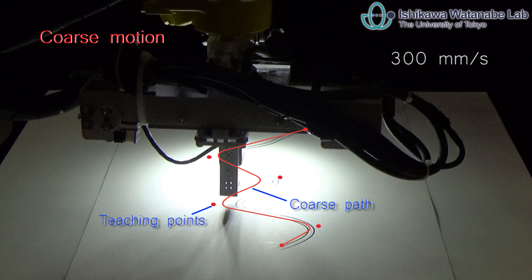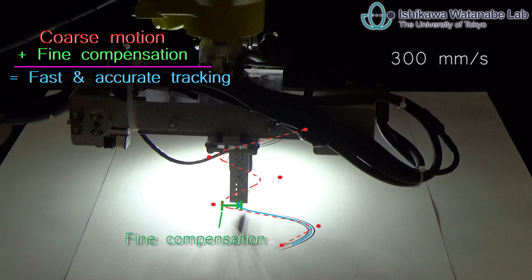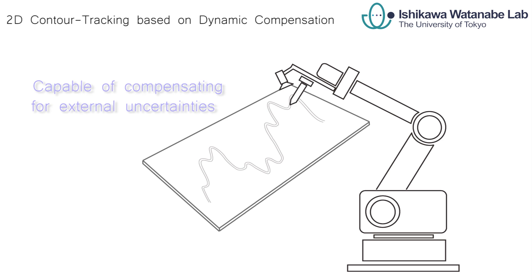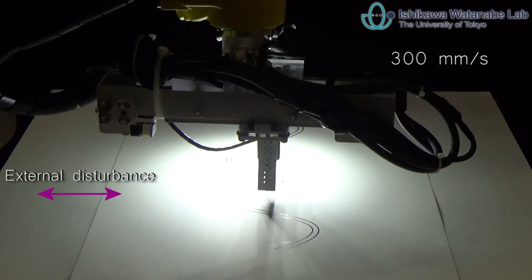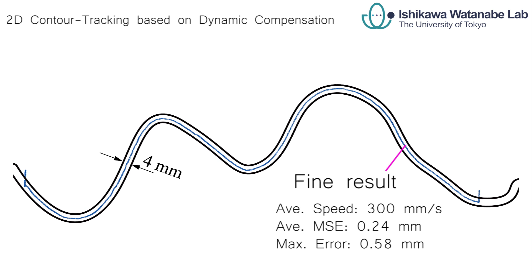This shows the coarse path through easy and rough teaching. This shows accurate tracking with the same coarse motion through fine compensation. Our method is also capable of compensation of external uncertainties. For example, the same tracking result can be obtained under unknown external disturbances.